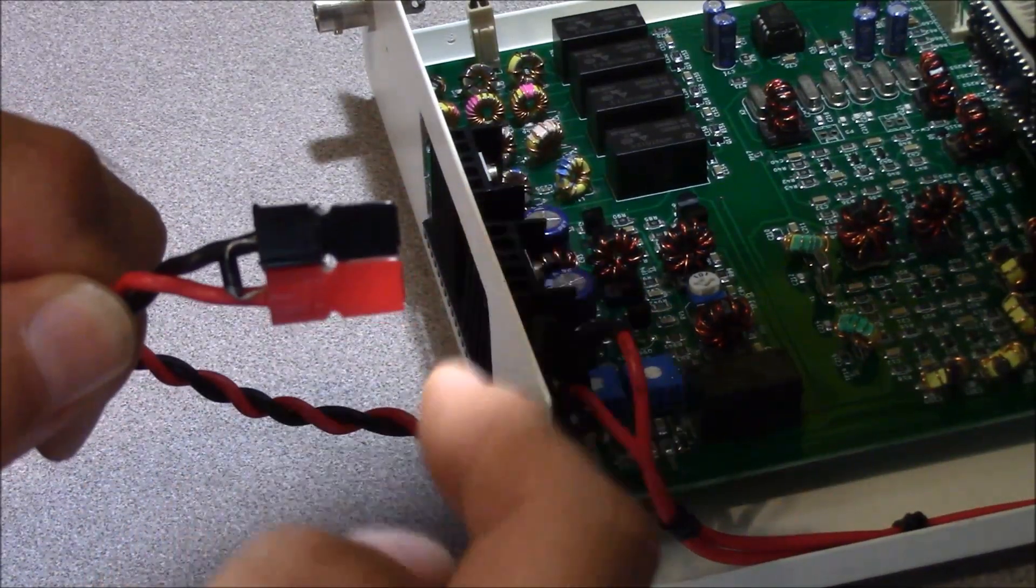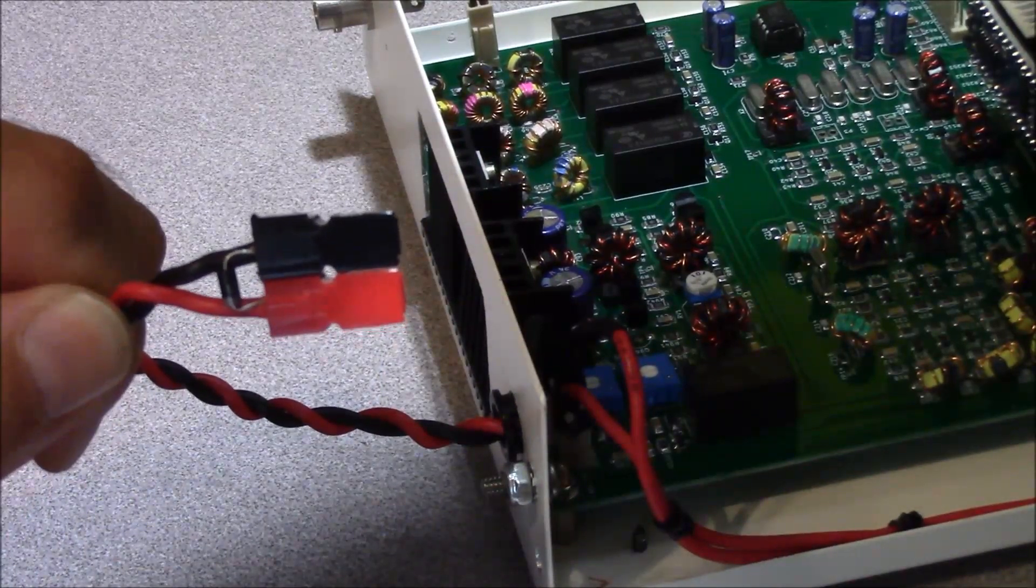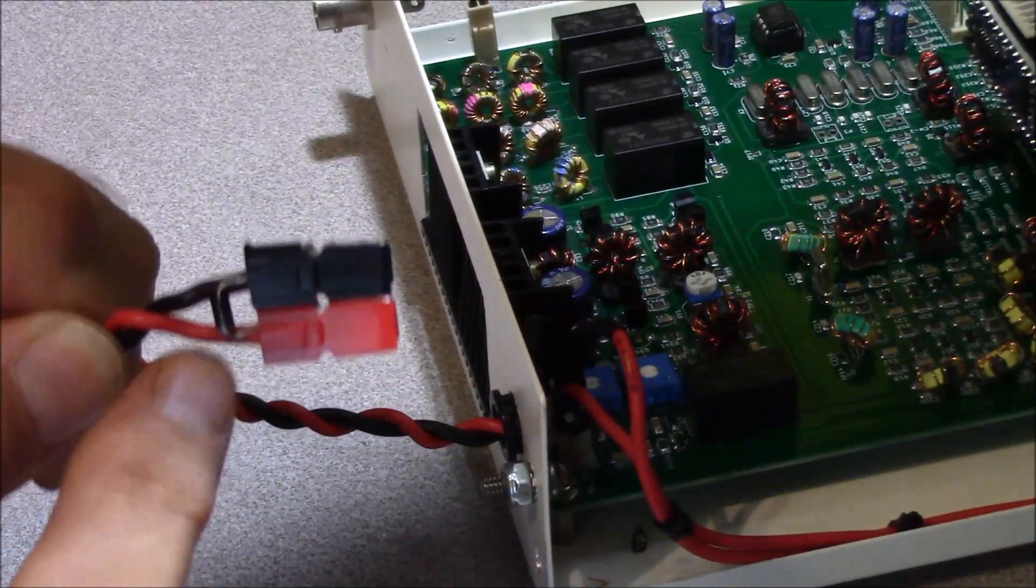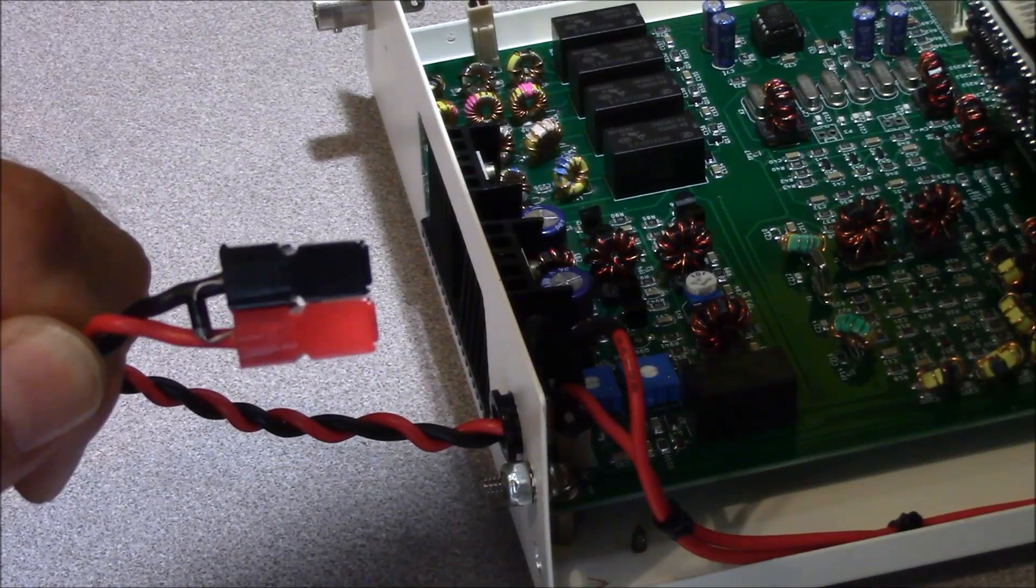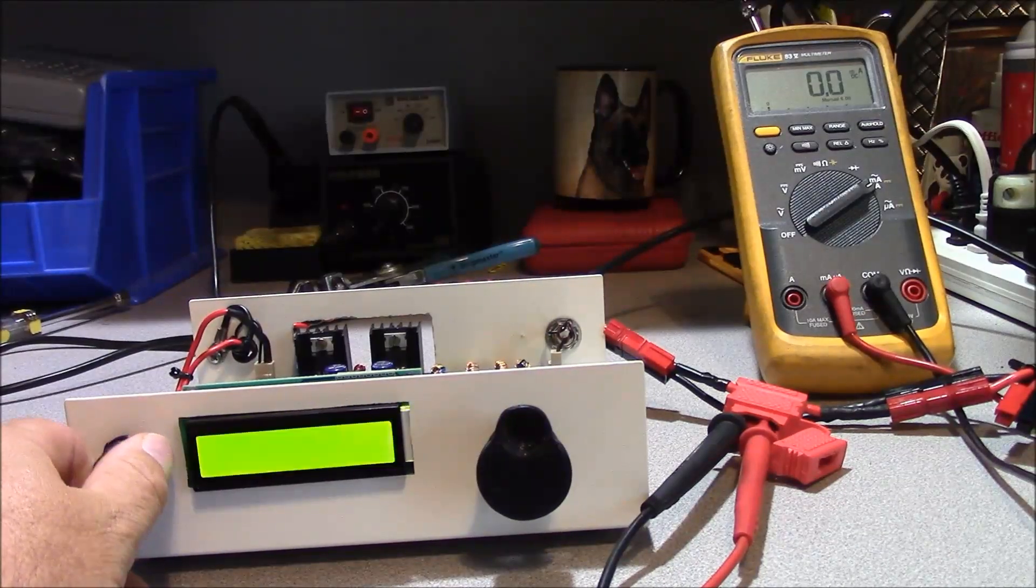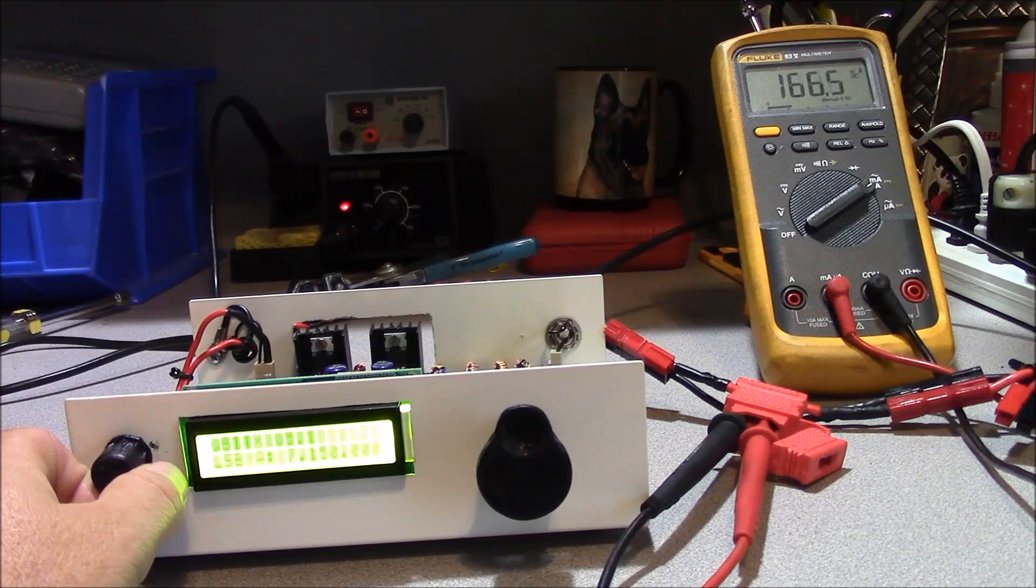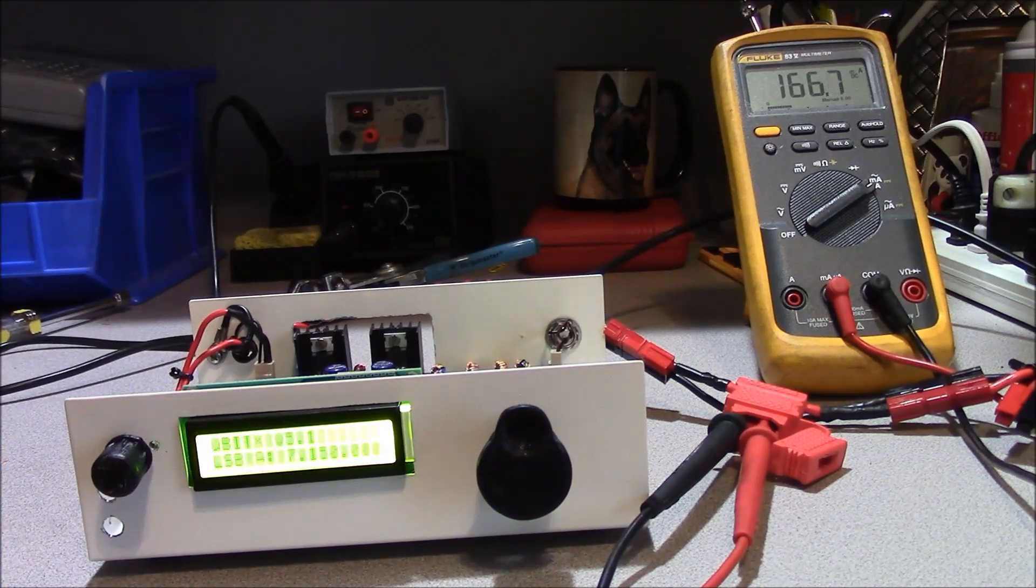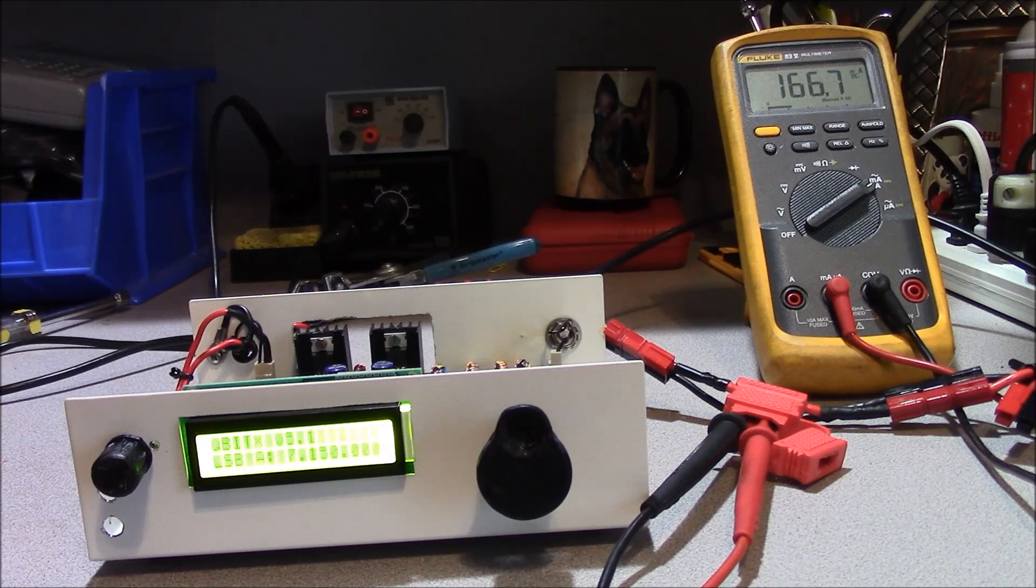So the reverse bias diode is down here at this end, and all that does is when you apply power backwards to the device, it causes a short here, and it hastens the fuse opening the circuit. Let's turn on our power and check our current. And our display lights up, and we're drawing 166.7 milliamps.